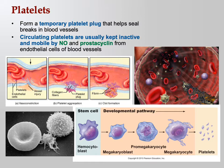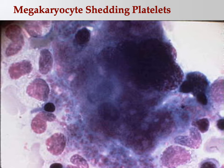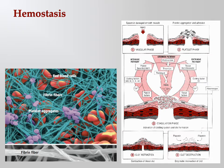Circulating platelets are normally kept inactive and mobile by nitric oxide and prostacyclin released from endothelial cells. Think of prostacyclin like a non-stick coating — it keeps platelets from sticking so you don't form random blood clots. The megakaryocyte sheds platelets as small fragments packed full of those granules.